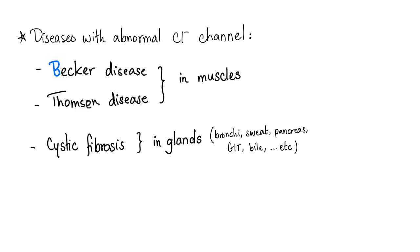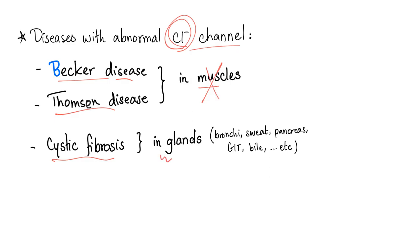Here is a compilation of diseases with an abnormal chloride channel. Becker disease has an abnormal chloride channel — not Becker muscular dystrophy, Becker disease. Thompson disease also has an abnormal chloride channel in the muscle — this is a channelopathy. Cystic fibrosis also involves a chloride channel problem, but not in the muscle — rather in glands such as the bronchi, sweat glands, pancreatic glands, pancreatic duct, GIT, bile ducts, spermatogonia, seminiferous tubules, fallopian tubes, and cervix. Cystic fibrosis is autosomal recessive, Becker disease is autosomal recessive, and Thompson disease is autosomal dominant.